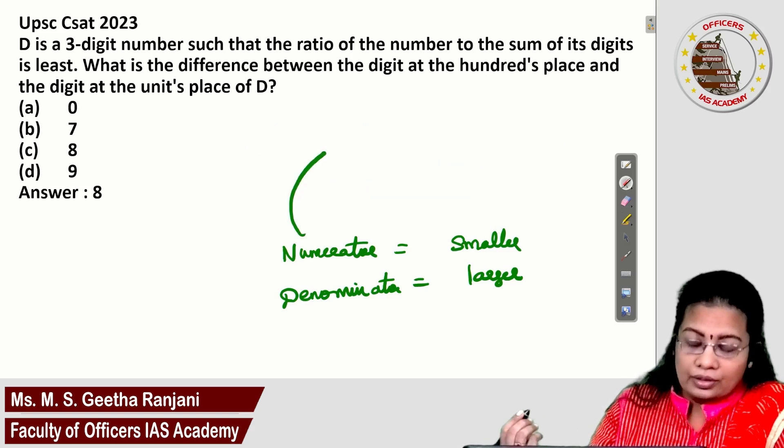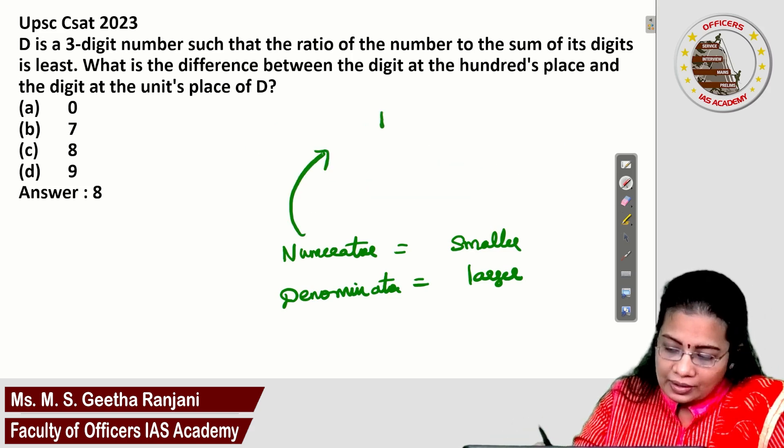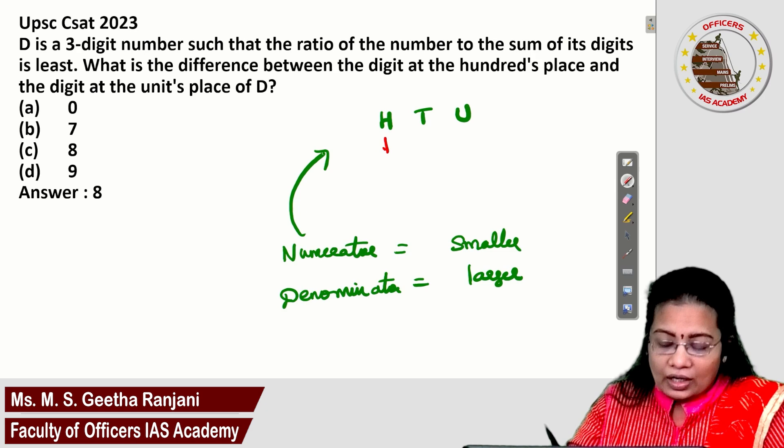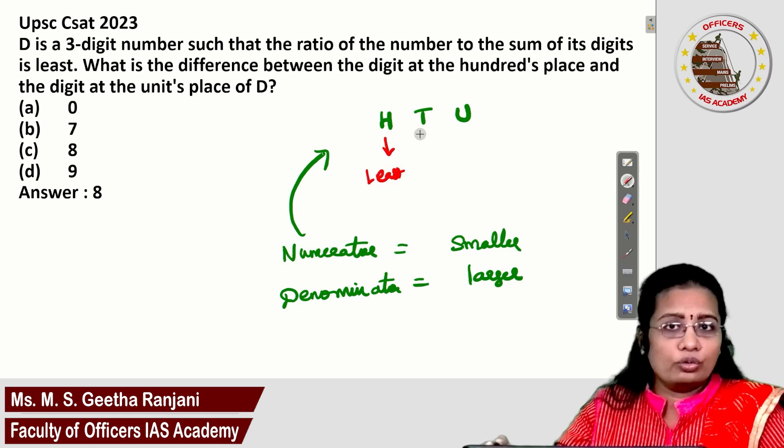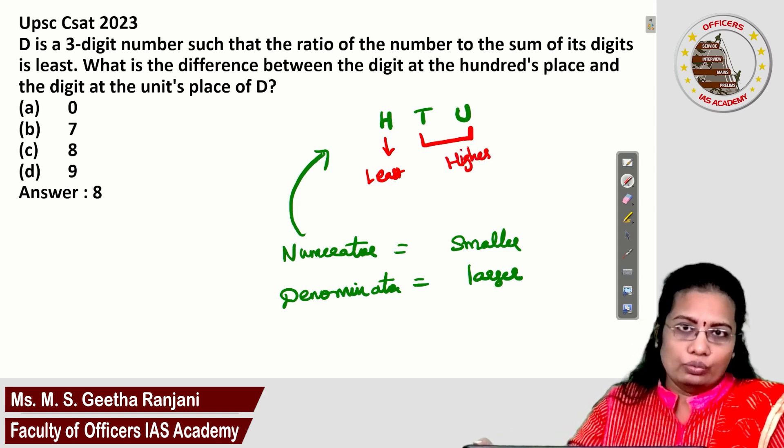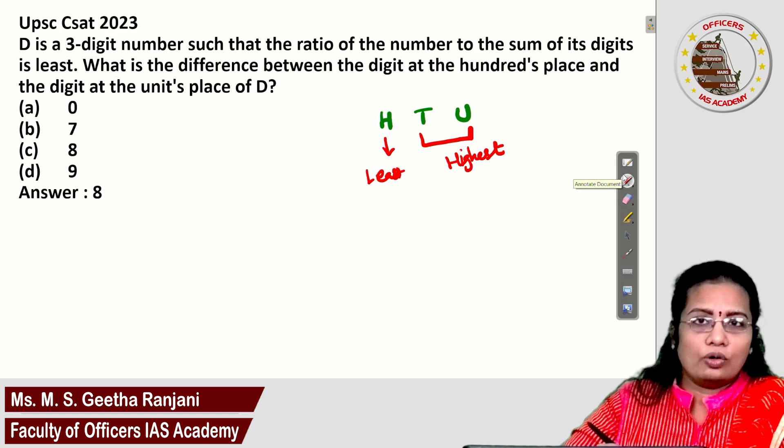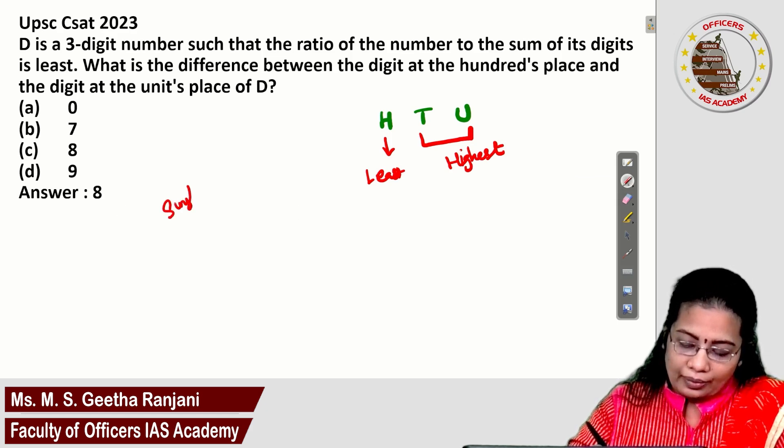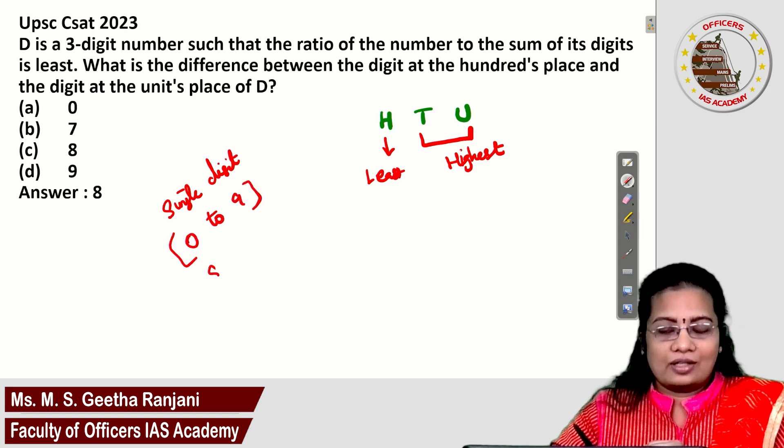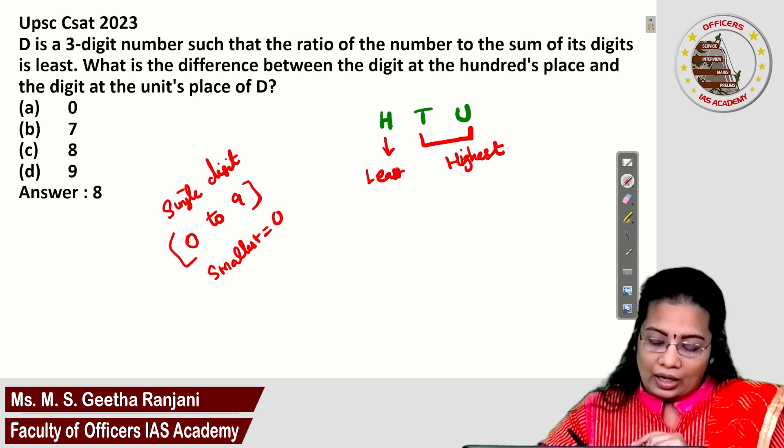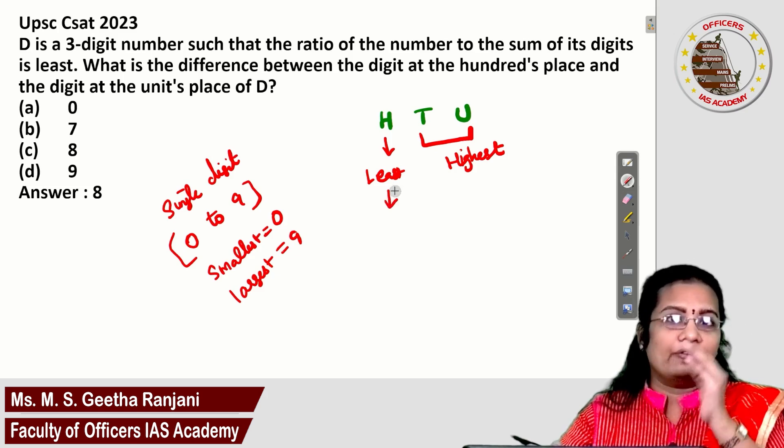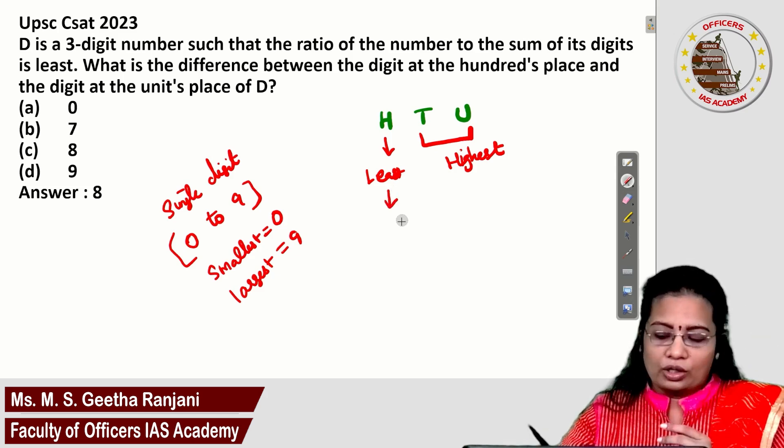To get the smaller numerator, the hundreds place, tens place, units place must be like this: take the least value for the hundreds position and for the units and tens, take the highest value. Any single digit number starts with 0 and ends with 9. The smallest single digit number is 0, largest is 9. If you put 0, it will become a two digit number, so you should not take 0.